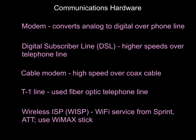A modem converts analog to digital and is used over a phone line, though the transfer rate is very slow. A DSL line also goes over a telephone line but at a higher speed. Many of us use cable modems, which provide high-speed internet over a coax cable — the kind of cable connected to your television. Many organizations use T1 lines, which have a very fast transfer rate using fiber optic telephone lines. For those without wired internet, there's a WISP — a wireless ISP — which provides a WiMAX USB stick you can plug into your laptop to connect to the internet. Examples include sticks from Sprint and AT&T.